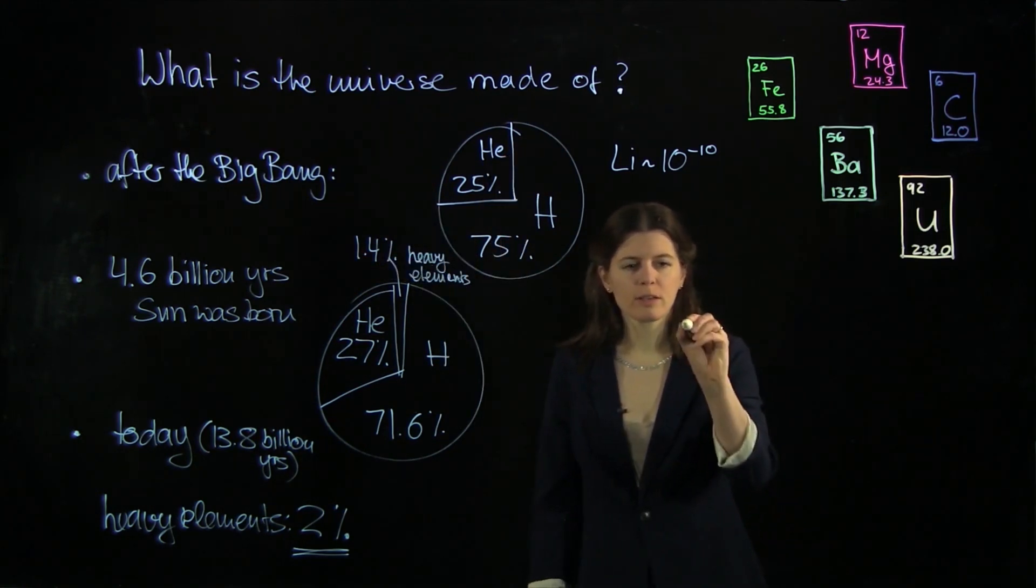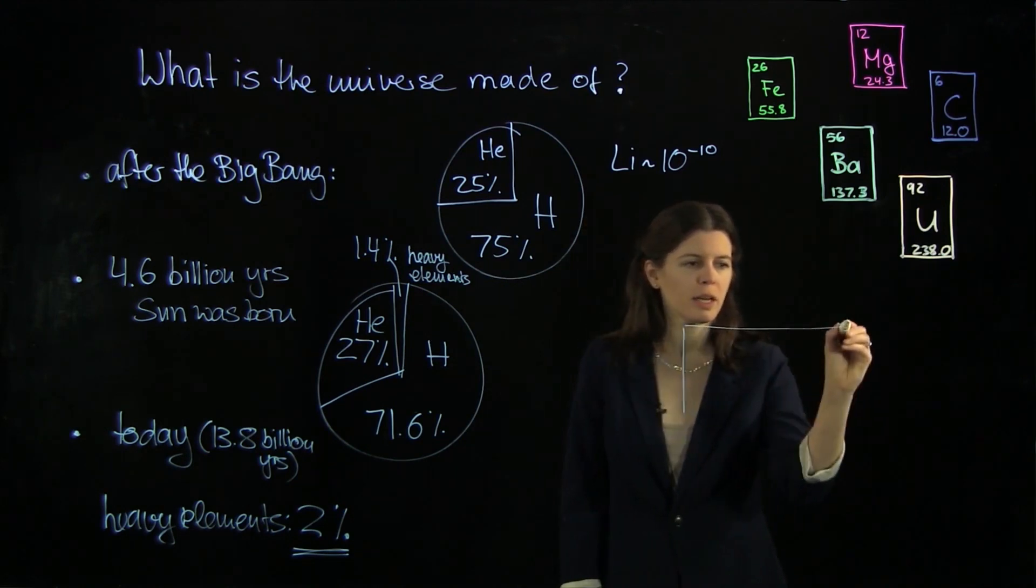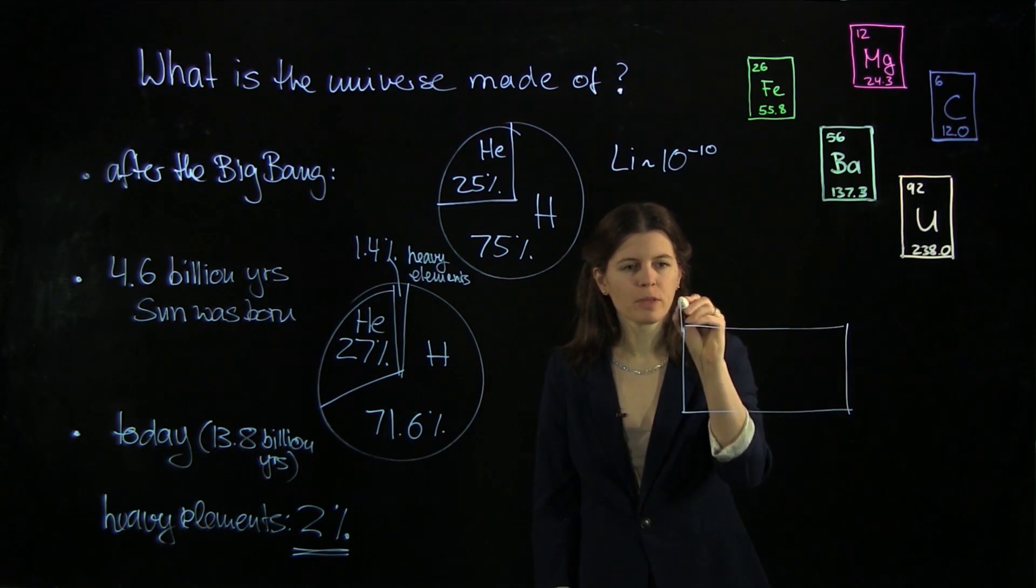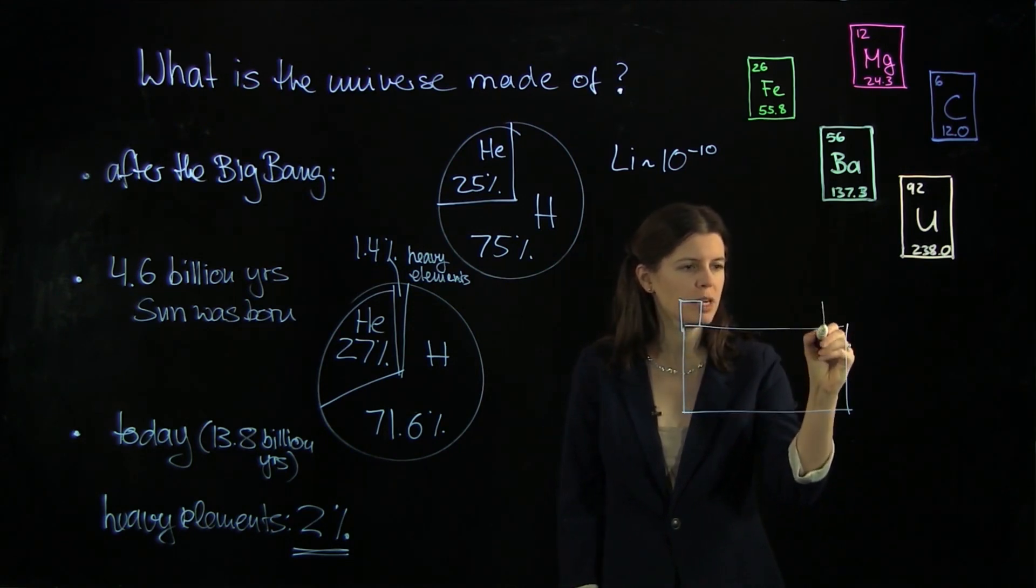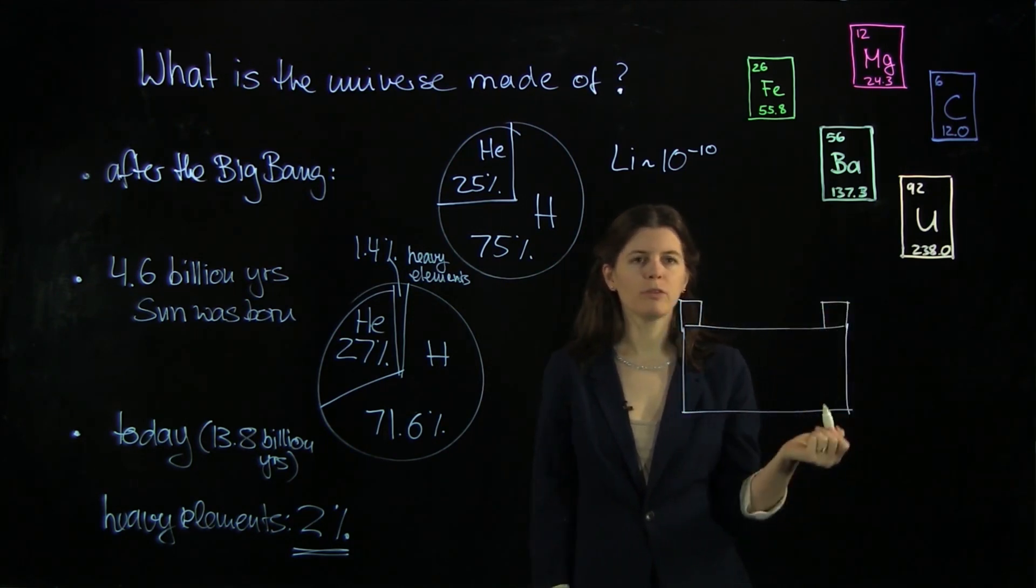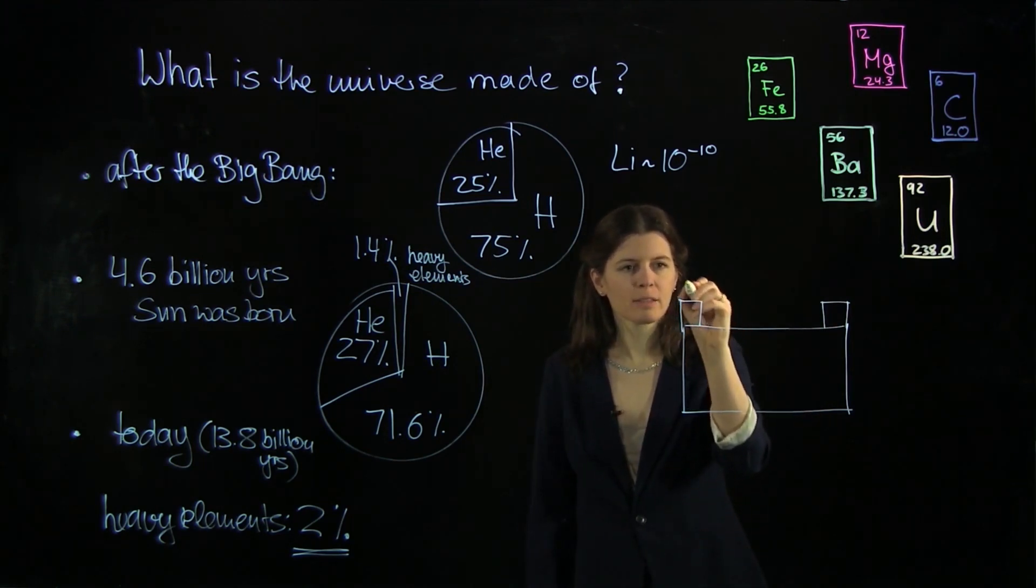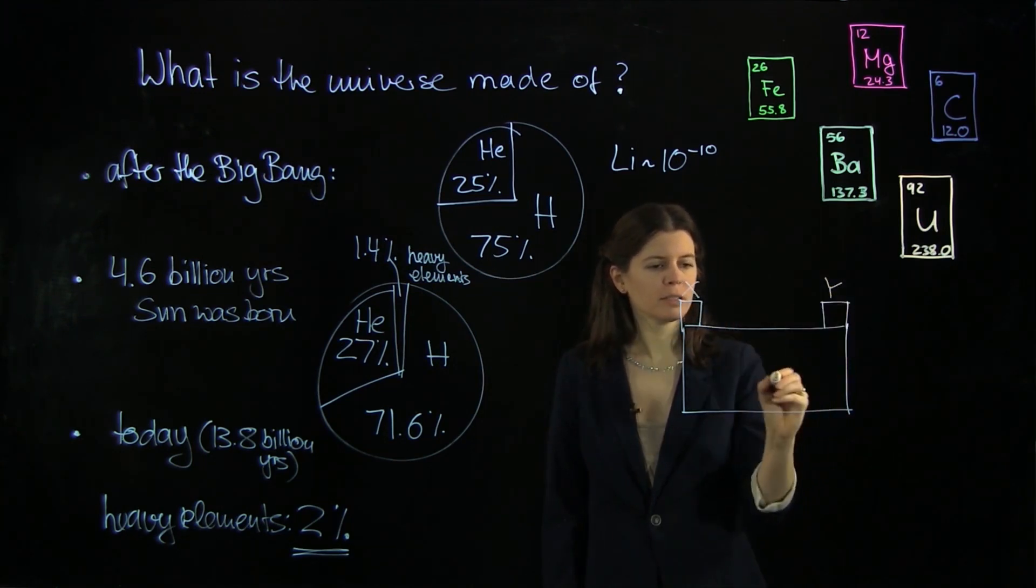And accordingly, astronomers already quite a while ago came up with the astronomer's periodic table. That is pretty simple, actually so simple that I can draw it for you here. And it contains three things: X, Y, and Z.